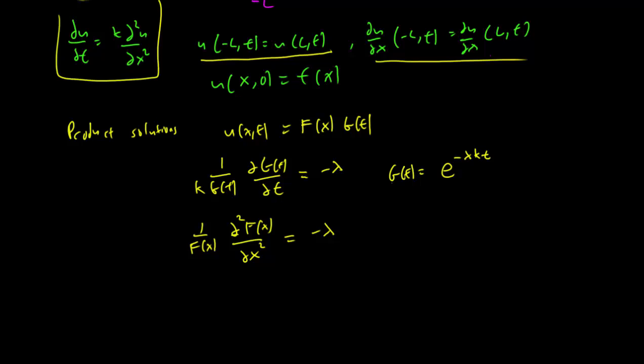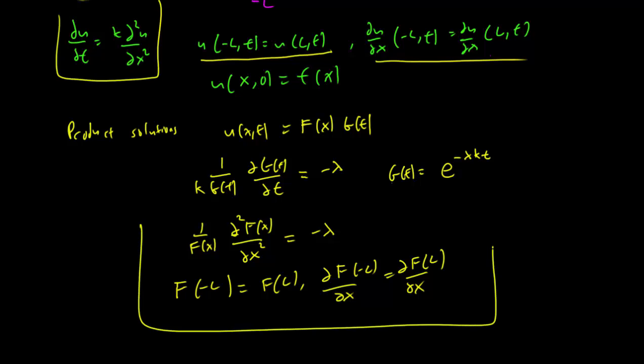So we have that f of -L is equal to f of L and the derivative of f with respect to x of -L is equal to the derivative of f with respect to x of L. So this eigenvalue problem, we can solve it.